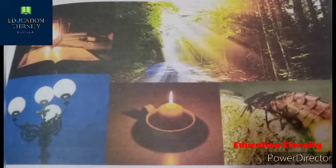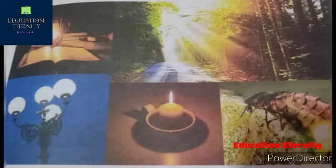A convex lens is called a converging lens. Parallel rays falling on a convex lens converge at a point on the other side of the lens called the principal focus. A concave lens is known as a diverging lens — rays of light falling on it are bent away from the principal axis, but appear to converge at a point called the principal focus.